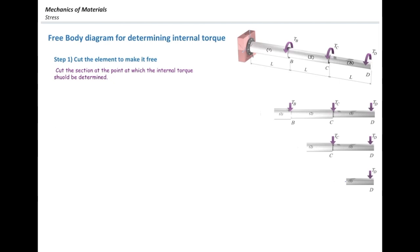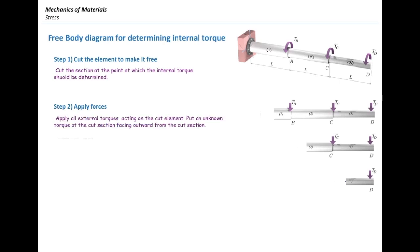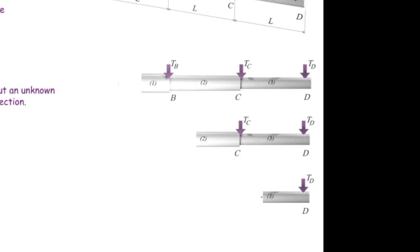The second part would be putting the unknown force on the cut section. Here we do not have any axial force, but we do have internal torques. Internal torques are shown by a double arrow. Double arrows are used instead of curved moments because they are easier to show on a plane. So I'm going to put unknown torques on the cut section — they must be outward from the cut section, just as with axially loaded elements. I'm going to put unknown torque in cut section 1, and similarly in sections 2 and 3.